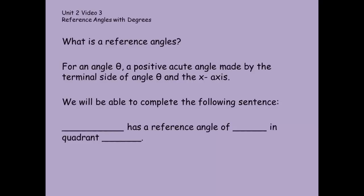So first of all, what is a reference angle? For any angle theta, a positive acute angle is made by the terminal side of angle theta and the x-axis. Let me draw a picture for you. We've got our positive x-axis and the terminal side of an angle. That's theta.